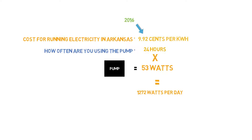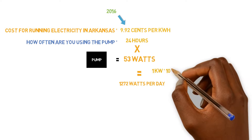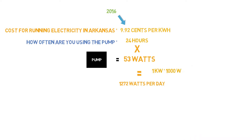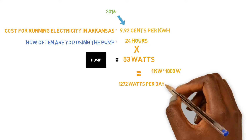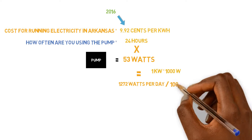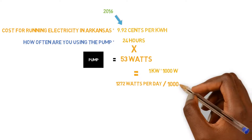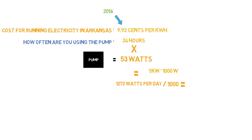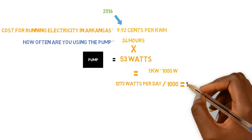Now we need to convert that to kilowatts. Why? Because that's how electricity is measured and billed by the electrical companies. 1 kilowatt equals 1,000 watts. So we convert by taking our 1,272 watts and dividing by 1,000. That gives us 1.272 kilowatts.